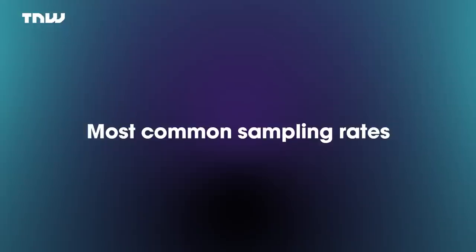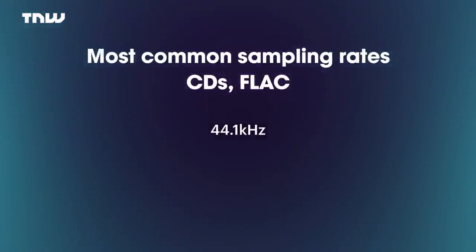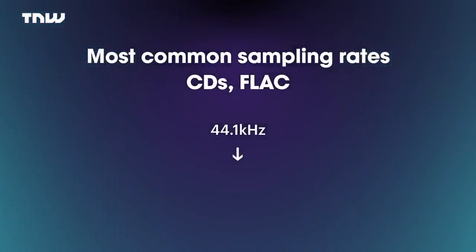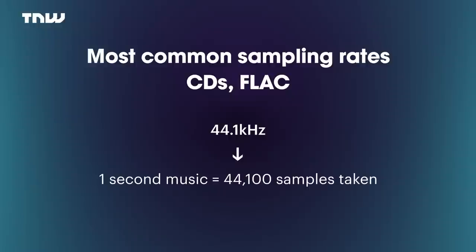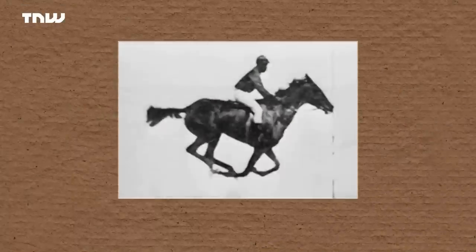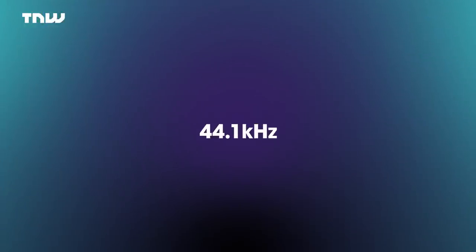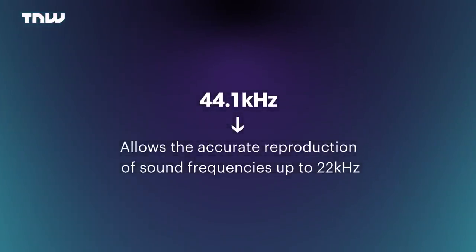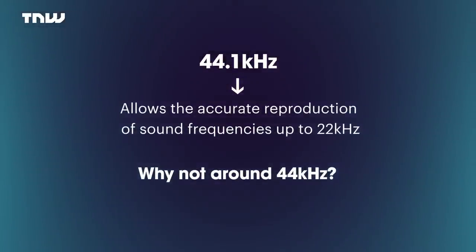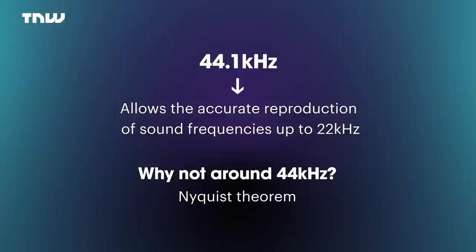The most common sample rate is that which you see on CDs and FLAC, which is 44.1 kilohertz. That means every second of music, there are 44,100 sample points taken to turn that analogue sound into a digital one. Think of it like TV frame rate — you're shown a moving image consisting of lots of still ones packed together. The 44.1 kilohertz figure allows accurate reproduction of sound frequencies up to 22 kilohertz.